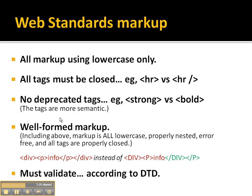We also have things like emphasis versus italic, and some other deprecated elements as well. Well-formed markup includes all of the above, but it also talks about properly nesting things. Properly nesting tags means something like this: here you have a div tag and a paragraph inside of it. That paragraph needs to be ended before you end the division. Think about having a plastic bag — if you put something inside the plastic bag, it's inside of it, and so you close the plastic bag around it on the outside. That same logic applies to coding: if you put a paragraph inside a div tag, it wouldn't make sense to close the division before you close the paragraph. So that would be not well-formed markup.